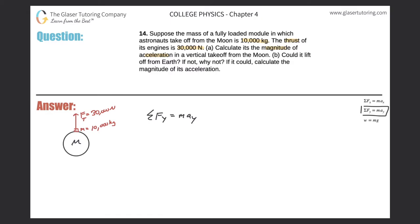The moon is also pulling down on this object, and I didn't take that into account yet. So let me do a free body diagram. We have the thrusters pulling up with a thrust of 30,000 newtons, and then there's the weight of the spaceship — the gravitational force of the moon pulling it down. I don't know what that is yet, but that's easy to find. The formula is W = mg.